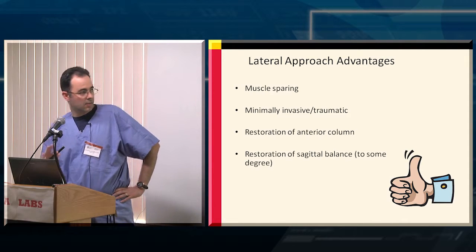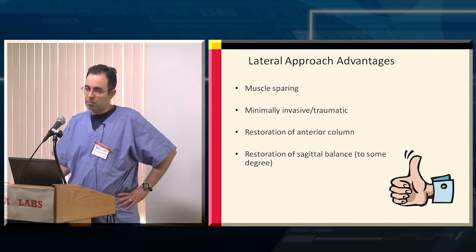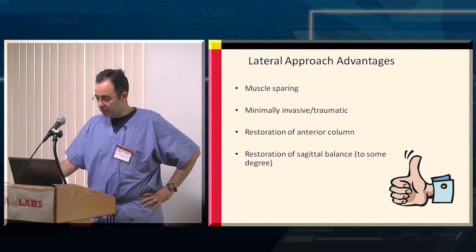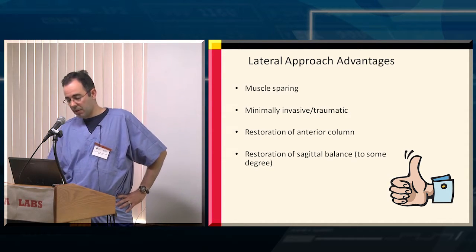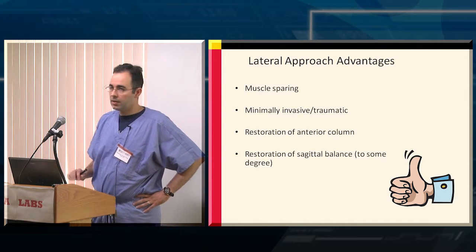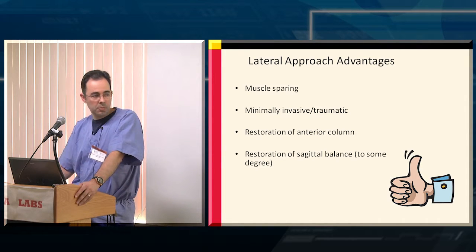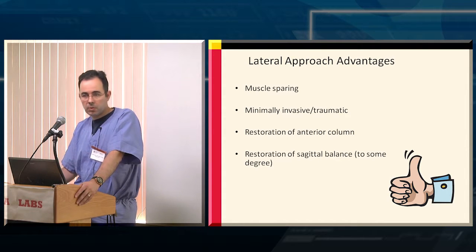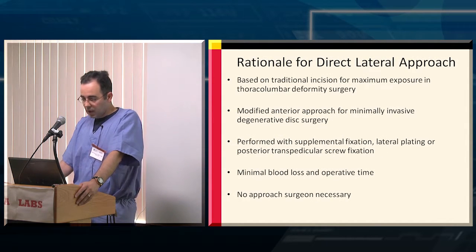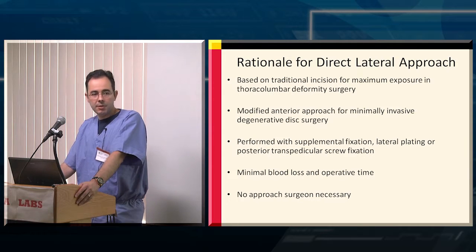If we say neuromonitoring is not necessary, this approach is actually very much the exception. The advantages of the lateral approach include: it's potentially a muscle-sparing technique, it's minimally invasive, you have the opportunity to restore the anterior column, and you can to some degree restore sagittal balance. It's not the main workhorse for sagittal balance improvement, but it does influence it to some degree.